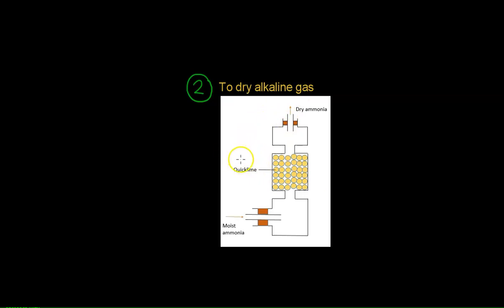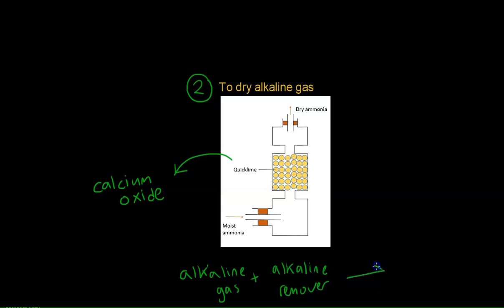We will be using, in this case, quicklime. Quicklime is actually just calcium oxide. Calcium oxide is alkaline, and so is the gas that we are passing through. So when we use an alkaline gas with an alkaline removal, no reaction happens. And that's what we want. We just want it to remove the water vapour without changing any of its properties.